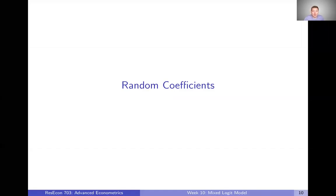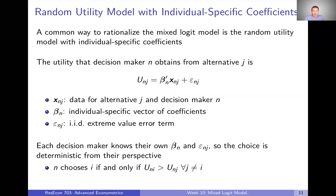In the last video we talked through the mixed logit choice probabilities, and now we're going to motivate those mixed logit choice probabilities as coming from random coefficients in the population. A common way to rationalize the mixed logit model is by thinking about a random utility model that has individual-specific coefficients.